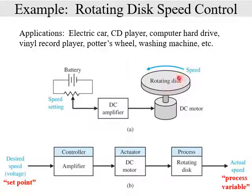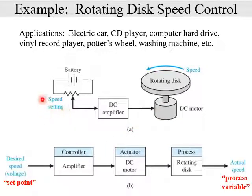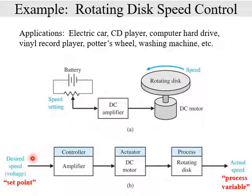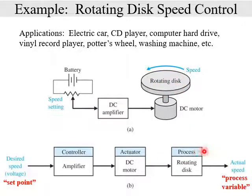The speed of the rotating disk is our output variable. The disk is rotated by a DC motor, which is the actuator. An amplifier sends the signal to the motor — that is our controller. The speed setting is a potentiometer or variable resistance connected to a battery that changes the voltage going into the amplifier. In the block diagram, the desired speed or voltage is our set point, which goes into the amplifier (controller), which sends a voltage signal to the motor (actuator), which turns the disk (the process). The final speed of the disk is our output or process variable.